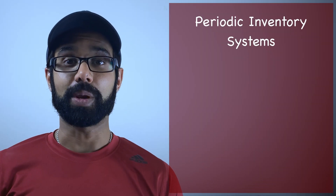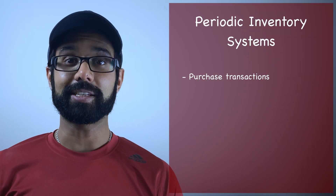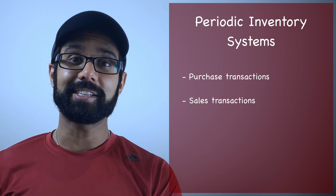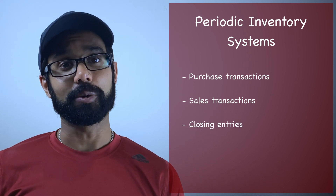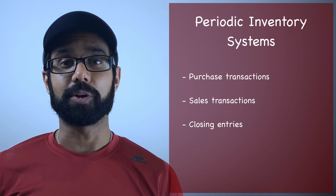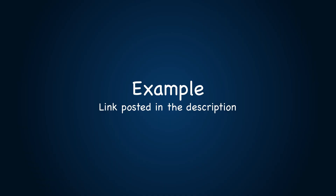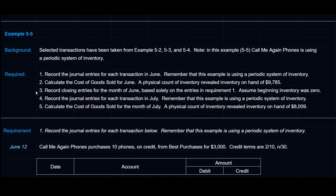In this video, we're focused on a periodic system of inventory. We'll take a look at an example where we purchase merchandise, sell merchandise, and then we'll look at closing entries for a periodic system of inventory as well. This is example 5-5.